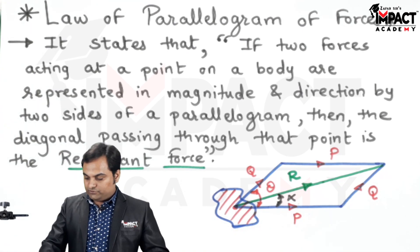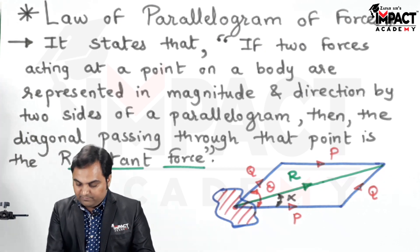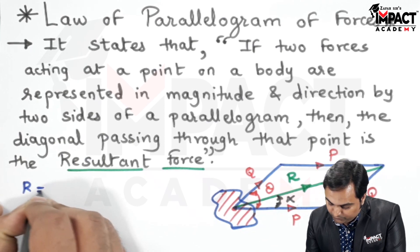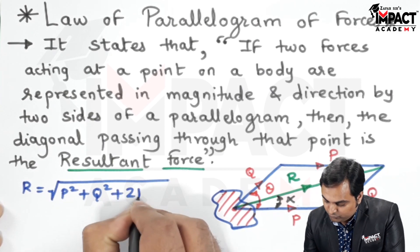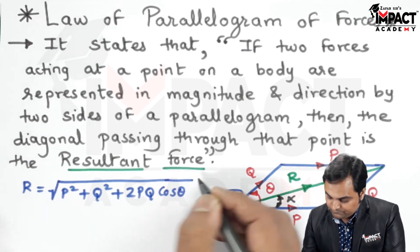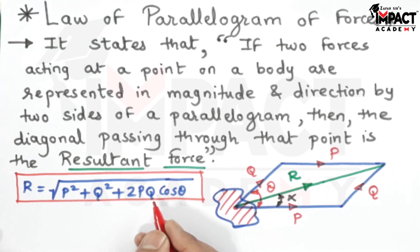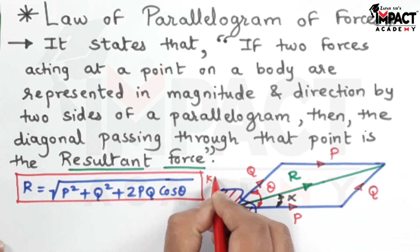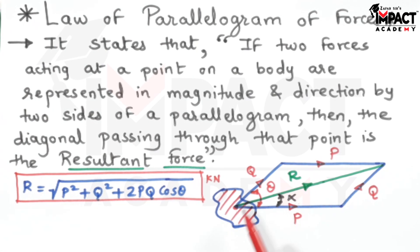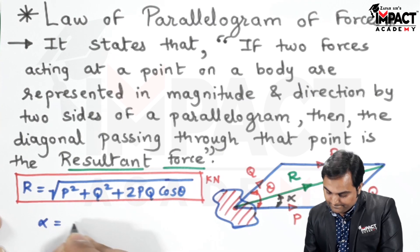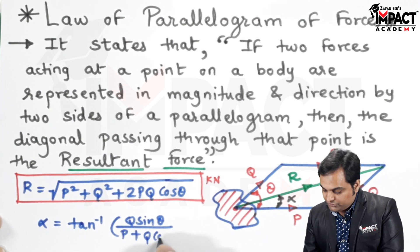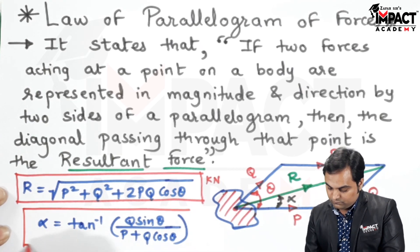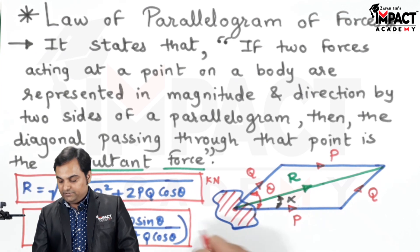By the parallelogram law of forces, the resultant force is given by the formula: R is equal to root of P squared plus Q squared plus 2PQ cos theta. Since it is a force, if P and Q are in terms of kN, then the resultant would also be in kN, and similarly if they are in N, the resultant would be in N. The location of the resultant, alpha, is given by the formula: tan inverse of Q sin theta upon P plus Q cos theta. The unit of alpha is in degrees.